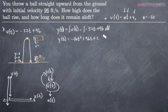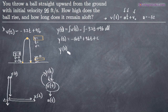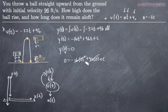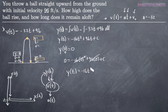To solve for C, we need an initial condition involving the position function y. Since the ball is thrown from the ground, we know y(0) = 0 — the height at time zero is zero. Plugging in 0 for t and 0 for y(t), we get: 0 = negative 16(0²) + 96(0) + C, which gives us C = 0. So our position function is y(t) = negative 16t² + 96t.